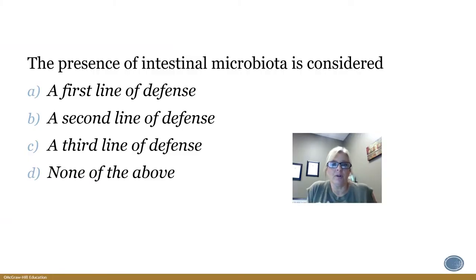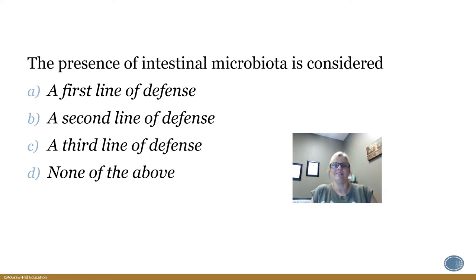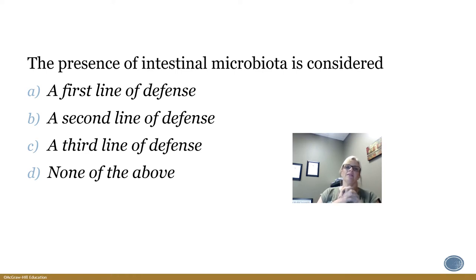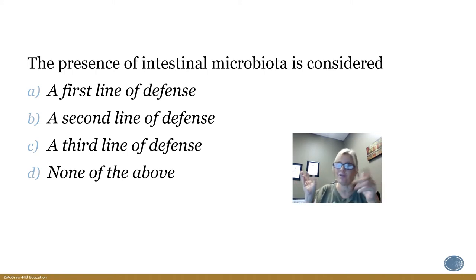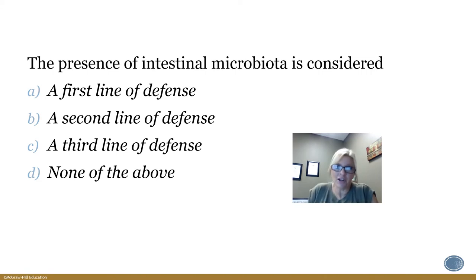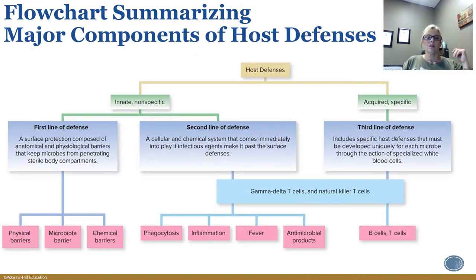A review question: the presence of intestinal microbiota is considered what — a first line of defense, second line, third line, or none of the above? Based on what we've discussed, that's all we've talked about so far — it's the first line of defense. This makes a good NCLEX-style review question.